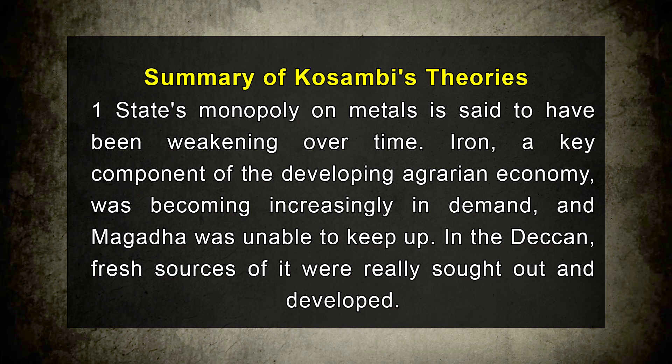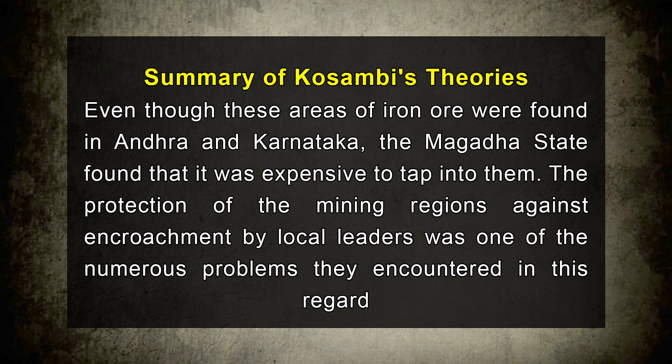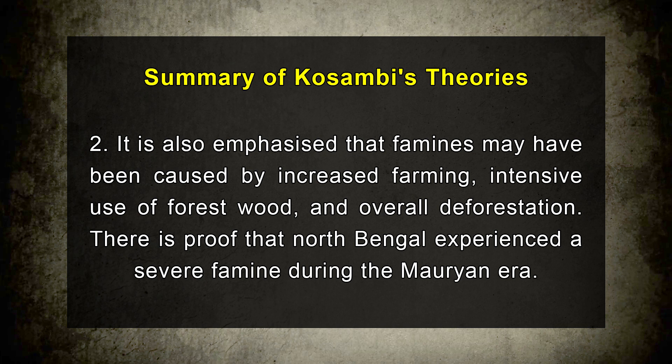Some of Kosambi's main arguments for the Magadhan empire's transformation and final fall include: the state's monopoly on metals was weakening over time. Iron, a key component of the developing agrarian economy, was becoming increasingly in demand and Magadha was unable to keep up. In the Deccan, fresh sources were rarely sought out and developed. Even though iron ore was found in Andhra and Karnataka, the Magadha state found it expensive to tap into them. It is also emphasized that famine may have been caused by increased farming, intensive use of forest wood, and overall deforestation — there is proof that North Bengal experienced a severe famine during the Mauryan era.